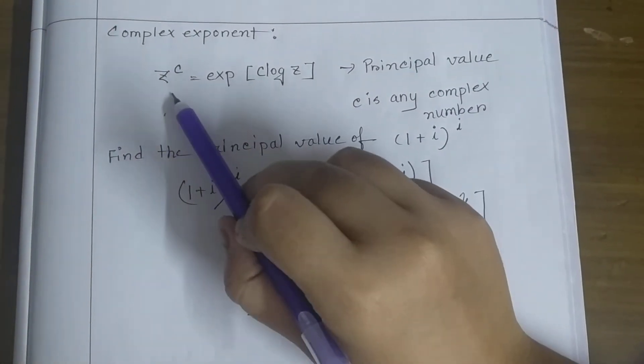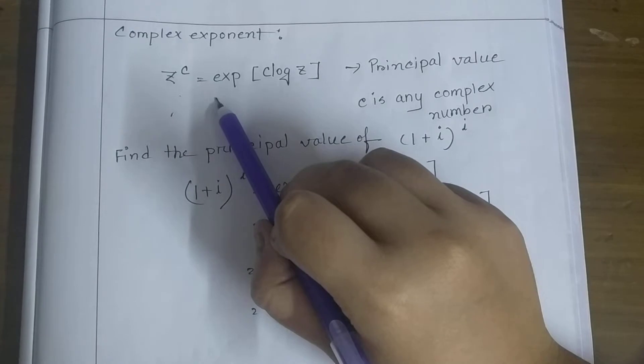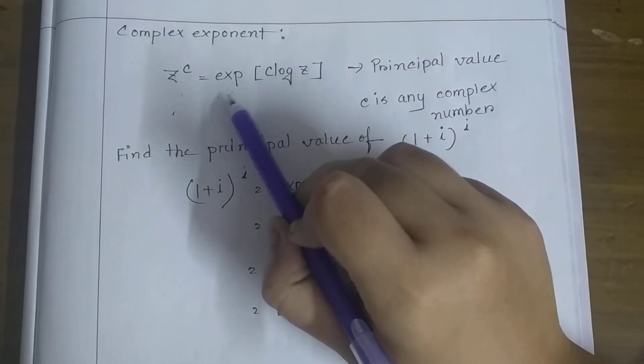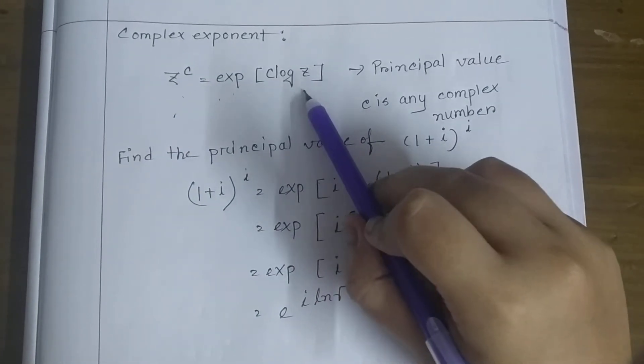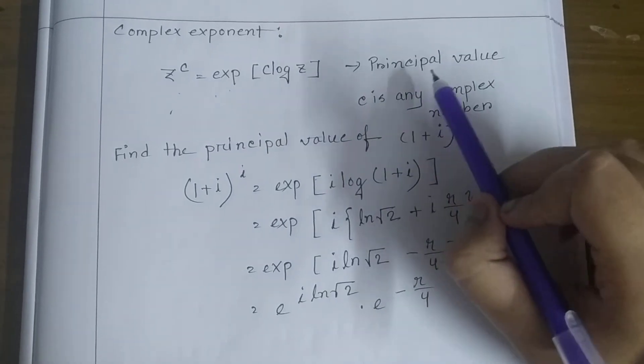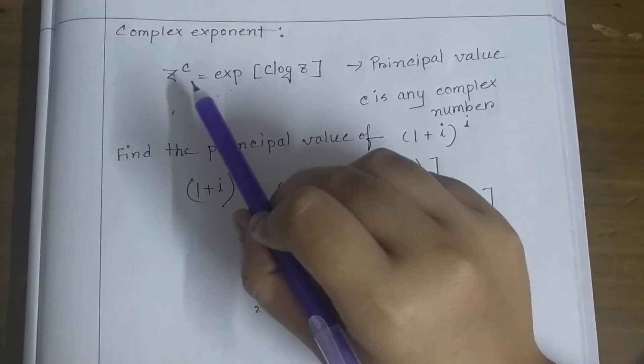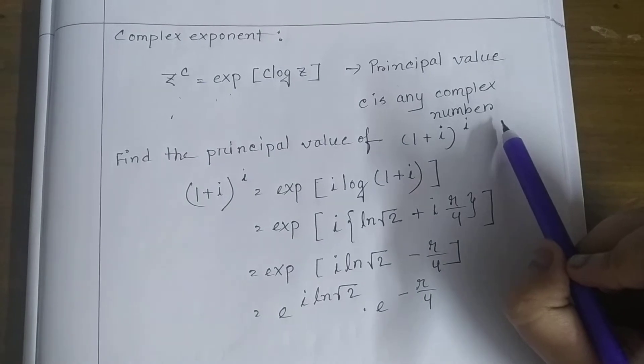Here we can see the formula: z to the power c equals exp of c log z to find the principal value. What is c? c is any complex number.